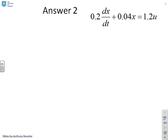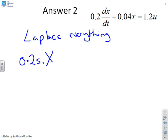I'm going to do this one a little bit more quickly. But again, just to remind you that all we're going to do is take Laplace of everything and see what results. So if I take Laplace transforms of the first term, I get 0.2s into X(s). If I take Laplace of the second term, I get 0.04 into X. And Laplace of the last term, I get 1.2 into U(s).